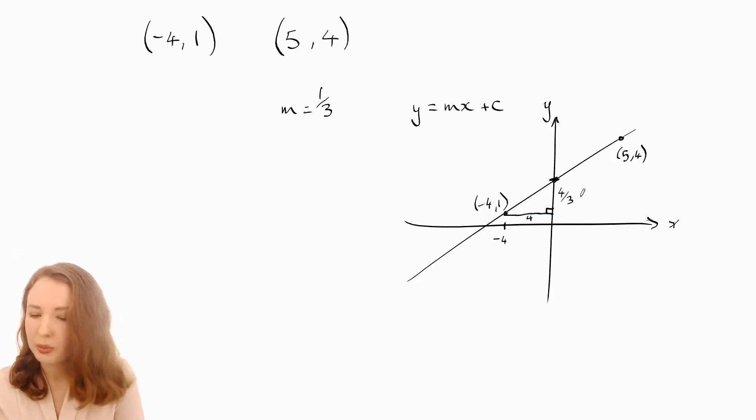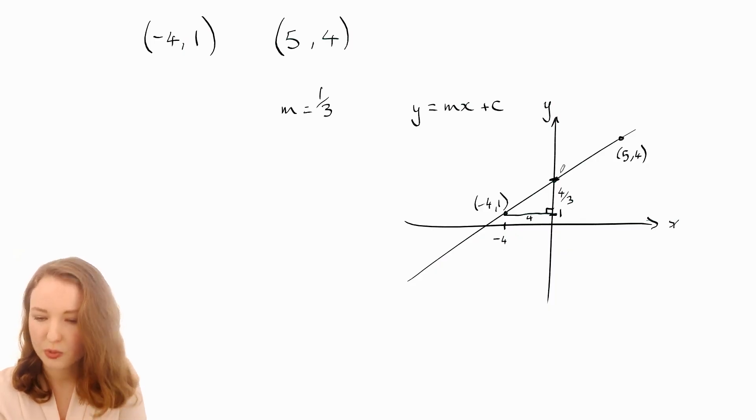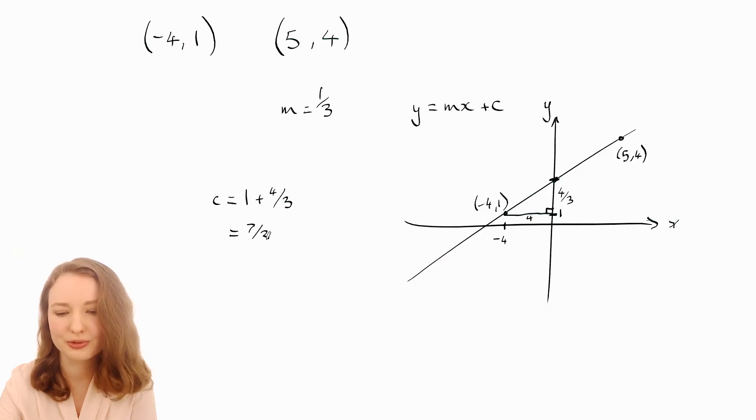Well that's really good now because we know where this is that's at 1 and then this is just 4/3 up from 1 so therefore the y-intercept has to be 1 plus 4/3 which will give us 7/3 like before.